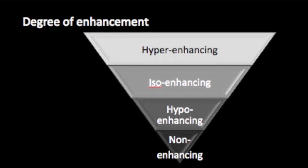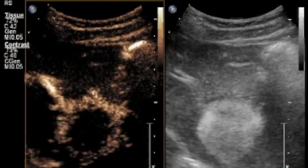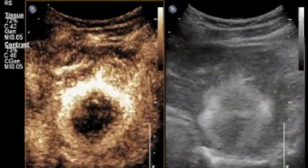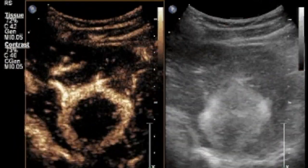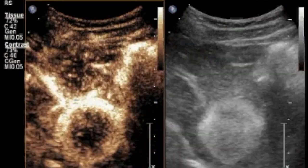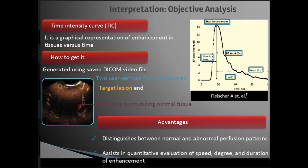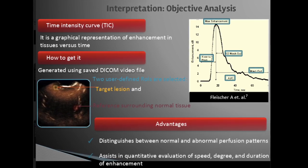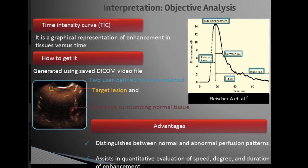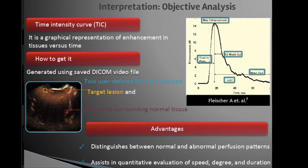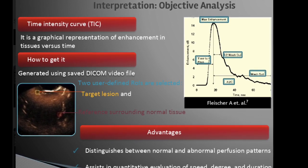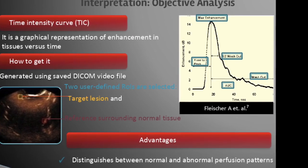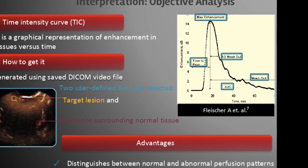There are two types of analysis we can perform. In subjective analysis, we visualize the type and degree of enhancement in a lesion — whether the lesion is hyper-enhancing, iso-enhancing, hypo-enhancing, or non-enhancing. In objective analysis, we plot time-intensity curves using two regions of interest: one within the target lesion and one within normal tissue, then analyze the enhancement patterns by comparing graphs from both areas.